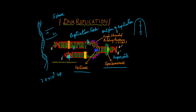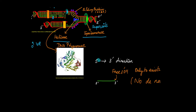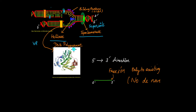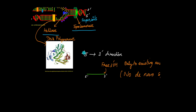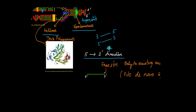The main enzyme involved in replicating DNA and synthesizing the new strand is known as DNA polymerase. For all its merits, DNA polymerase has a few limitations. The main limitation is that it can synthesize the new strand of DNA only in the 5' to 3' direction. We already know that the two strands run in opposite polarities, so DNA polymerase can only synthesize the new strand in the 5' to 3' direction.